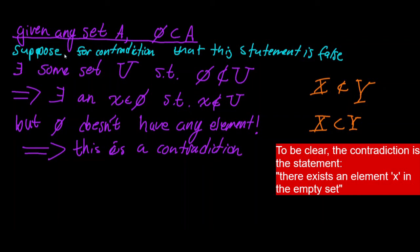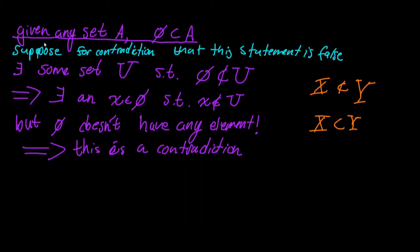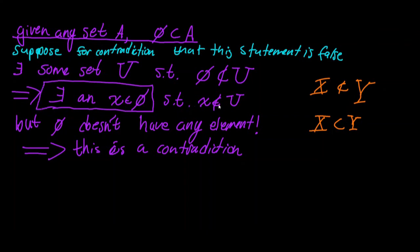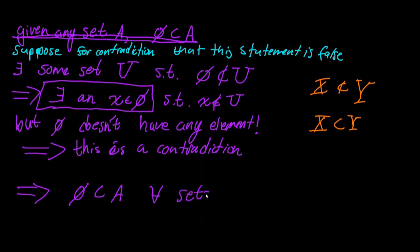Thus, the statement must be true. Remember, a statement can either be true or false, not both. Given any set A, the empty set is a subset of that set A. If we suppose this statement is false, we arrive at a contradiction — namely, that there exists an x in the empty set. There cannot exist an x in the empty set at all. Therefore, the empty set is a subset of A for all sets A.